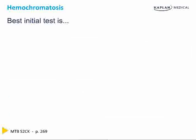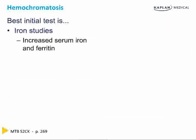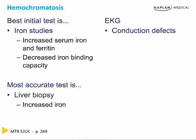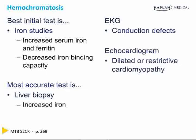The best initial test is iron studies, showing increased serum iron and decreased iron binding capacity. The most accurate test is a liver biopsy showing increased iron. An EKG will show conduction defects. An echocardiogram will show dilated or restrictive cardiomyopathy. The best therapy is phlebotomy.